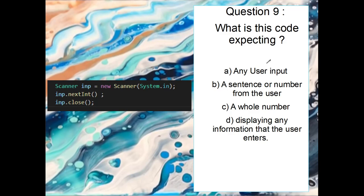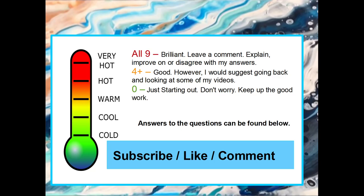Okay, so what is this code expecting? It's expecting an input. What kind of input? Well, we've got this int, this next int, so it's expecting some kind of input. A number, so it can't be any user, it has to be a number. Can't be a sentence. It's most likely going to be C, a whole number. Displays any information the user enters? No. So the answer is C.